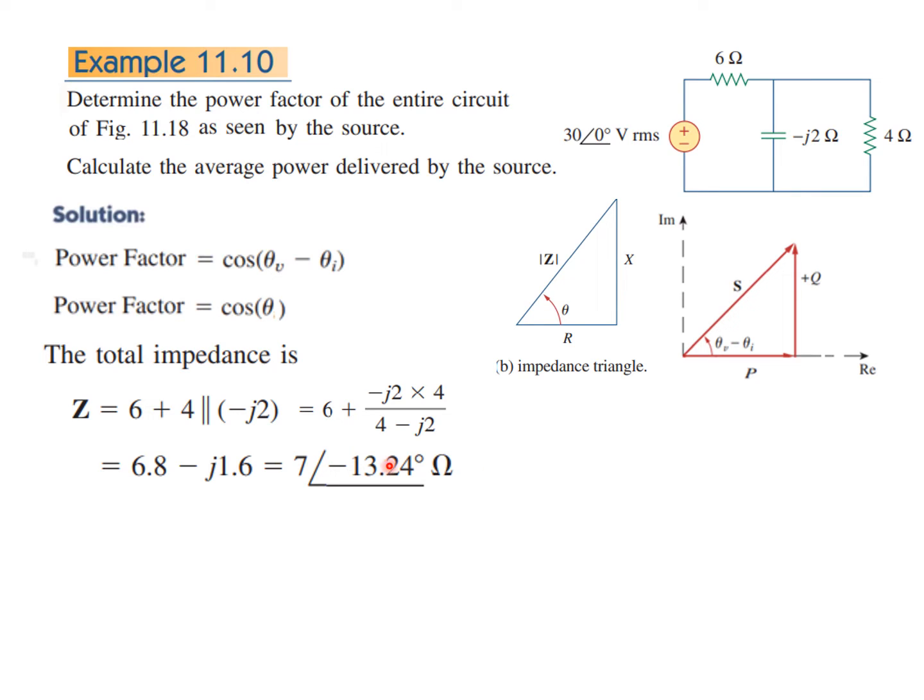So this angle is the angle theta. So the equivalent circuit will be now like this—this is the input and this is total impedance. So theta now is minus 13.24 degrees, and therefore the power factor will be cosine of theta, which is equal to 0.9734.